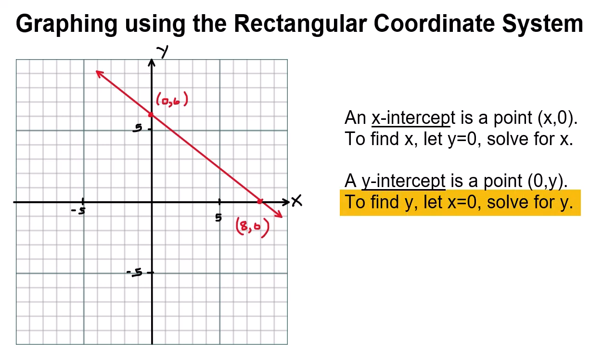We can see our x-intercept on this graph is the point x equals 8, y equals 0. And our y-intercept on this graph is the point x equals 0, y equals 6.